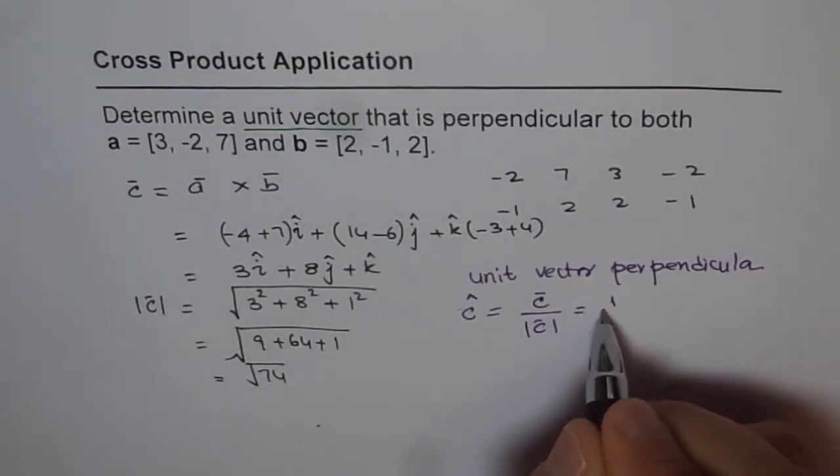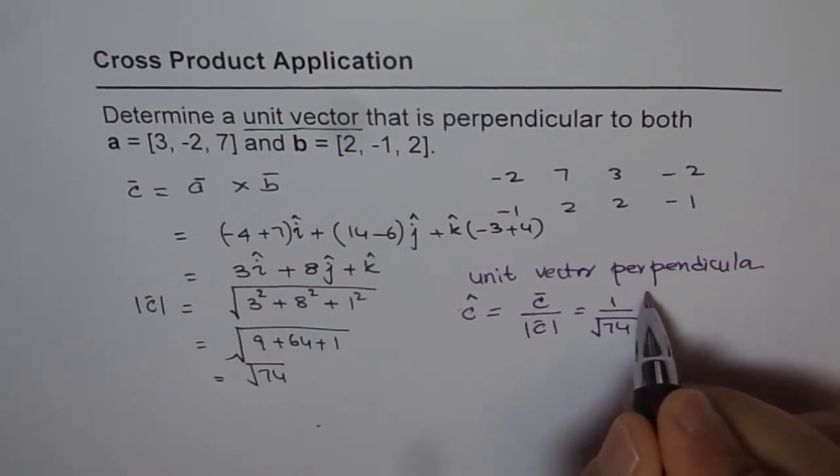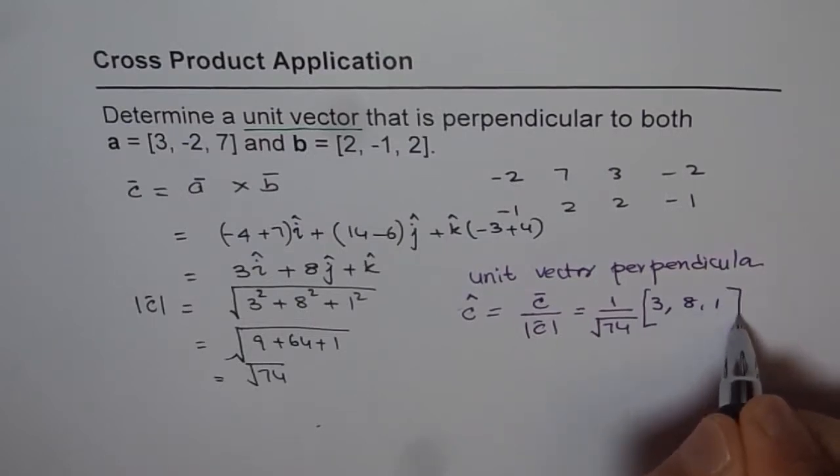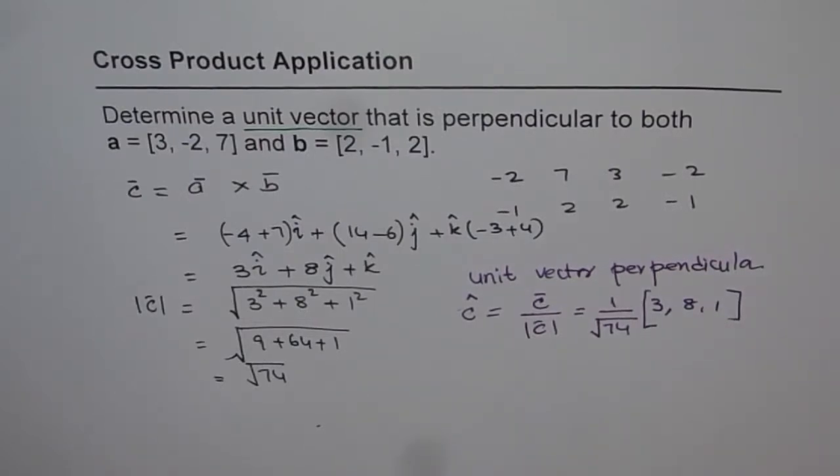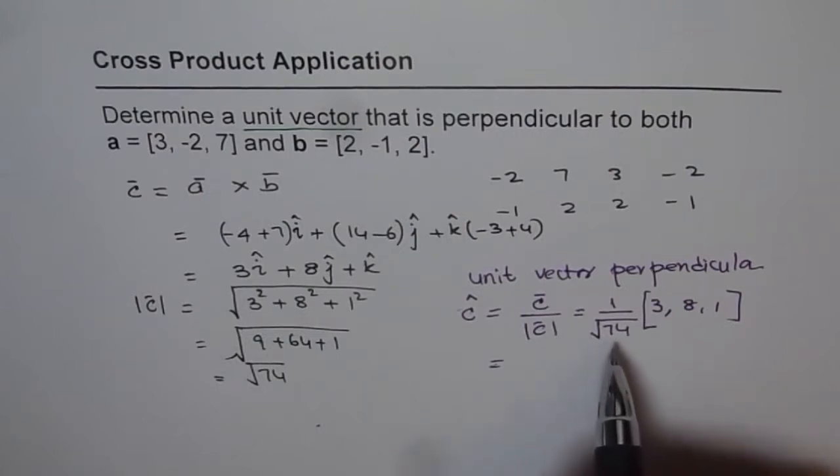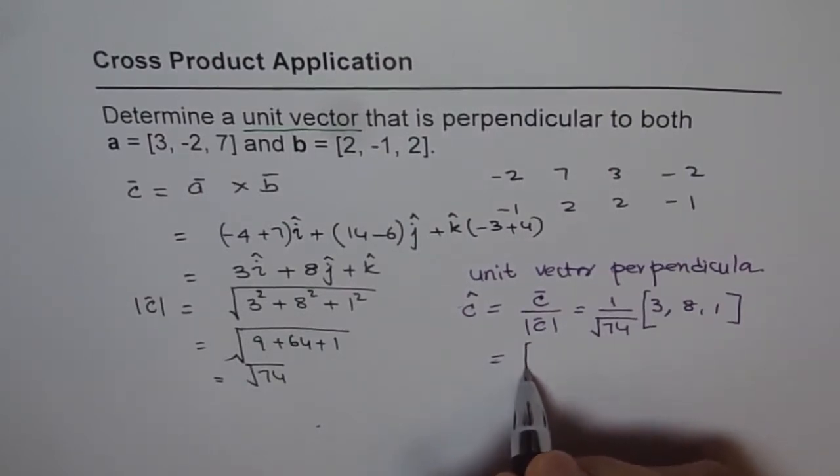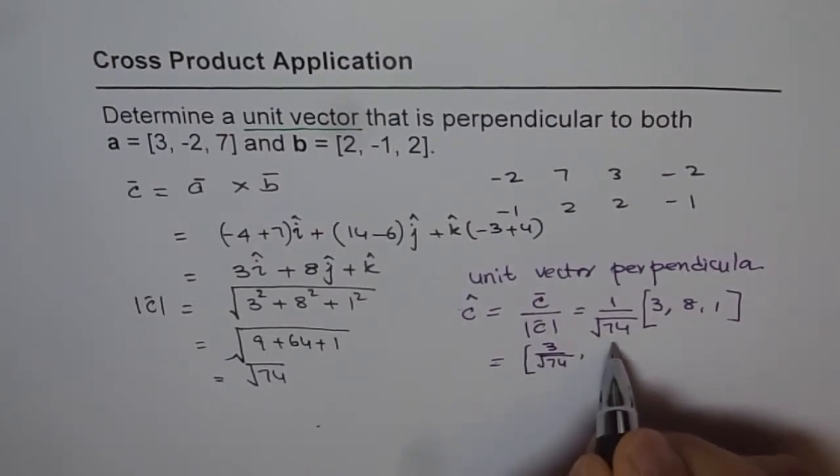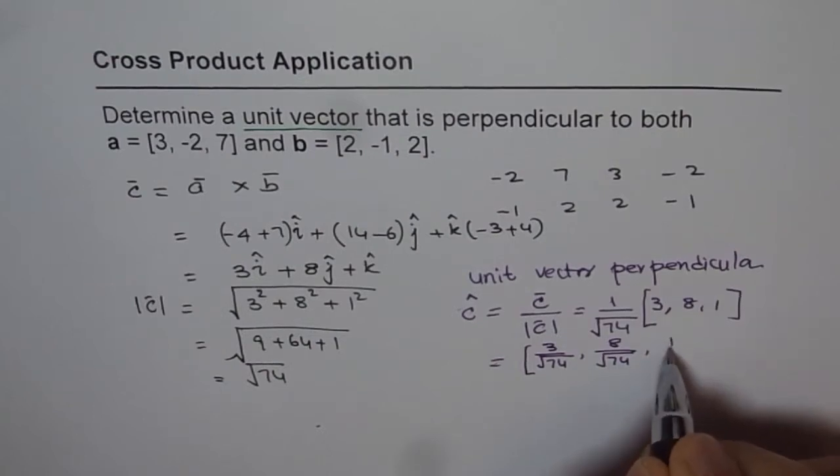So this is equals to 1 over square root of 74 times, we can write like this also, or we can write like this, [3, 8, 1]. So that is the answer. So at times, you may like to write it as 3 over square root of 74 also. So you could have written this as sometimes, like this also, 3 over square root of 74, 8 over square root of 74, comma 1 over square root of 74. That's it.